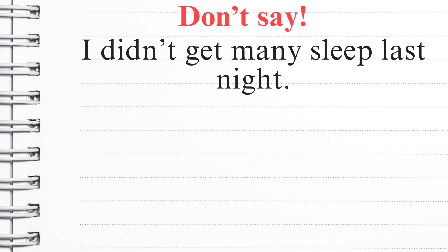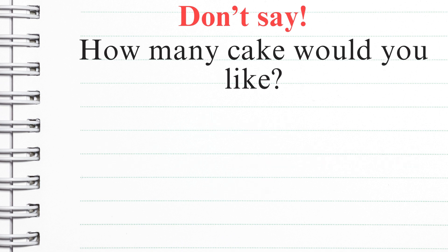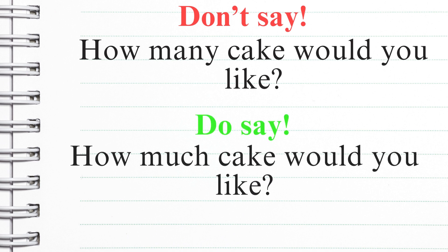Don't say 'I didn't get many sleep last night' — that doesn't make sense. Do say 'I didn't get much sleep last night.' Don't say 'how many cake would you like?' Do say 'how much cake would you like?' If you were thinking about whole cakes, then 'how many cakes would you like?' would be right, but in this example we're talking about a slice of cake, so 'how much cake would you like?' is correct.